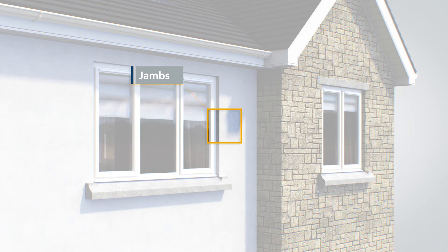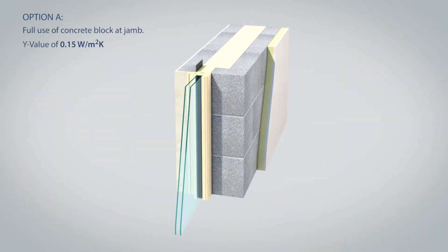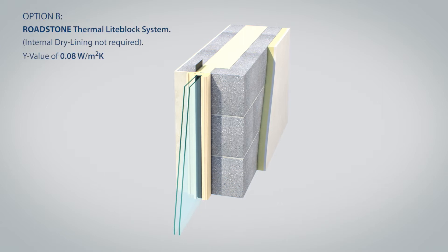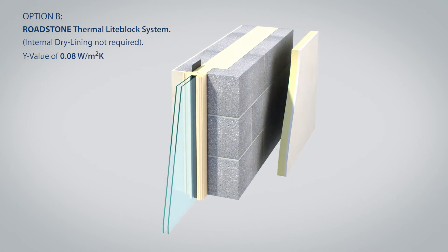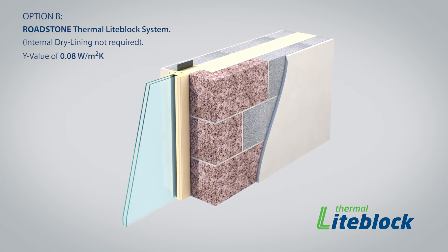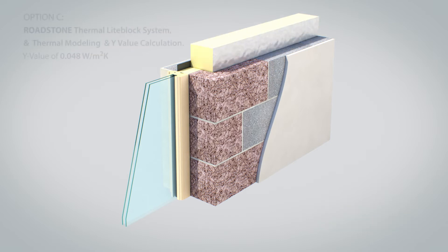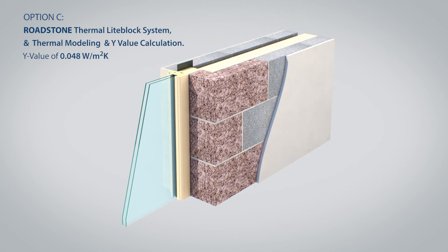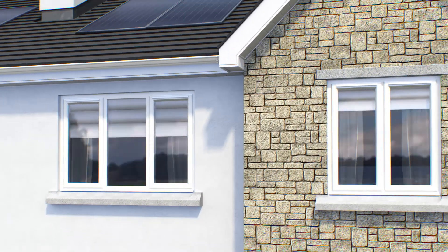Detail 4 is the jam detail. Option A shows a standard concrete L-Block construction giving a Y-Value of 0.15. Option B shows Roadstone thermal light block, which provides a robust detail for securing the window or door, allowing the builder to take a Y-Value of 0.08 and remove the internal dry lining from the walls to accrue cost saving while maintaining the A2 house. In Option C, the builder avails of Roadstone's Y-Value calculation service to get a Y-Value of 0.048, thereby allowing a reduction in the thickness of insulation in the wall while still maintaining the A2 BER rating.